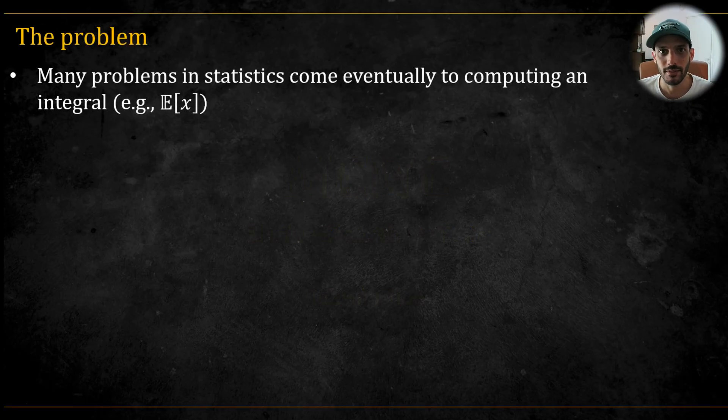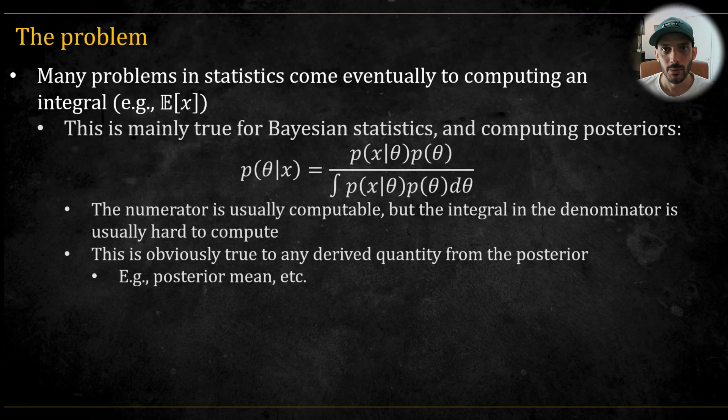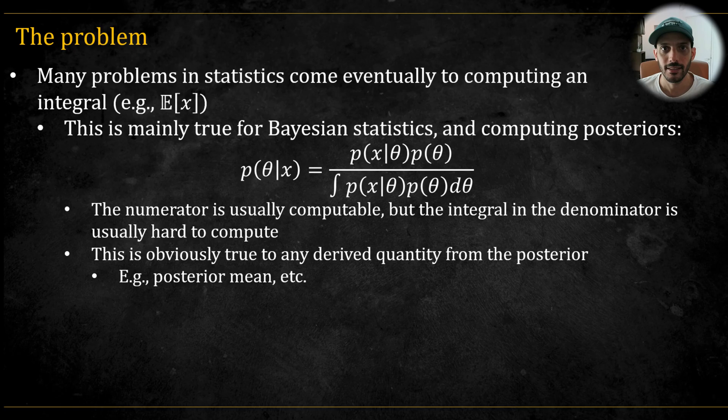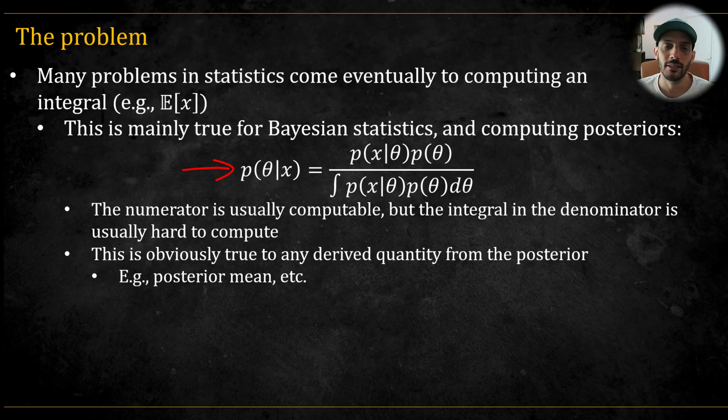Many problems in statistics boil down to computing an integral. Even something as simple as computing the expectation is actually an integral, which we sometimes estimate using a sample mean. The main place where we encounter hard integrals is in Bayesian statistics, when we wish to compute the posterior probability of the parameters given the observed data.